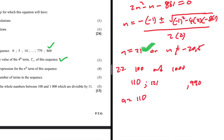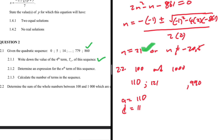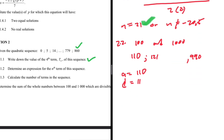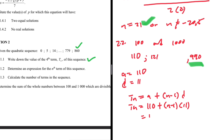So a = 110 and d = 11. For an arithmetic sequence, TN = a + (n - 1) × d = 110 + (n - 1) × 11 = 110 + 11n - 11 = 11n + 99. We need the number of terms, so we substitute 990 to find N.